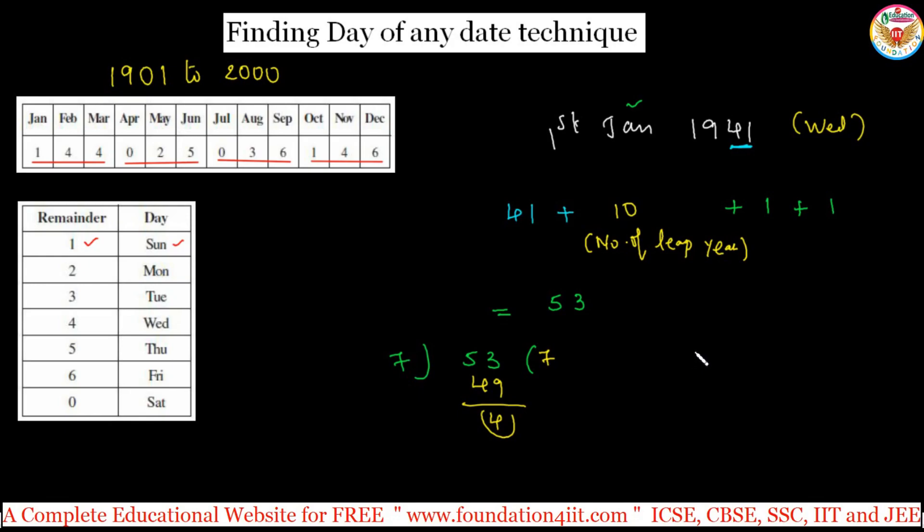This is instant calculation instead of taking century concept. Now let us take one more example: 26 June 1983. Only four numbers. Take 83. In 83, how many fours are there?